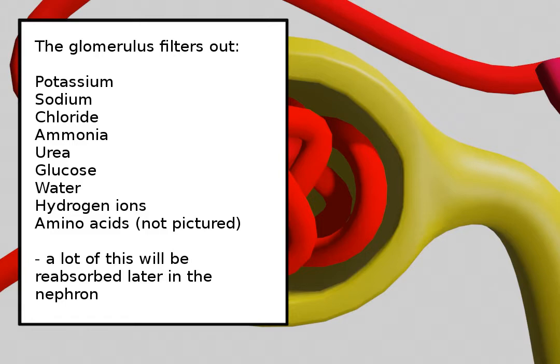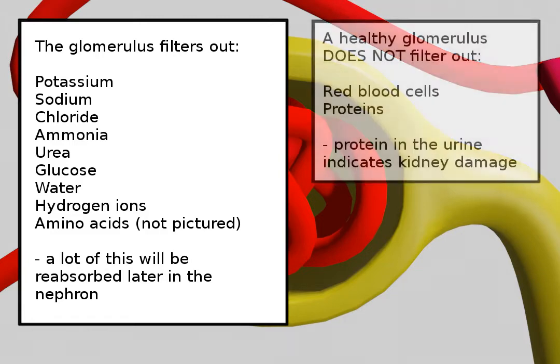Remember that in a healthy glomerulus, we do not filter out red blood cells or proteins. Damage to the glomerulus can cause proteins to seep through, which is why doctors will sometimes test for proteins in the urine as an indicator of kidney disease.